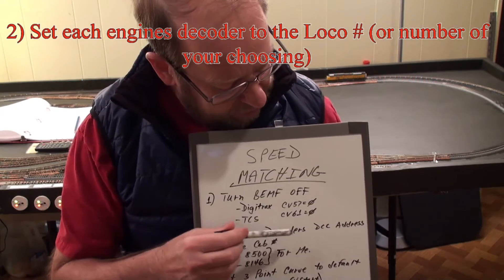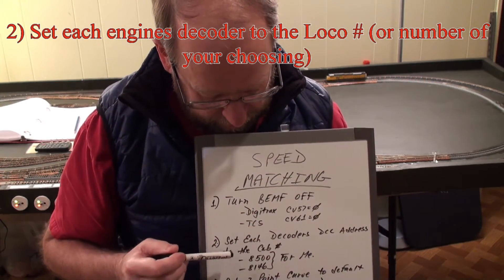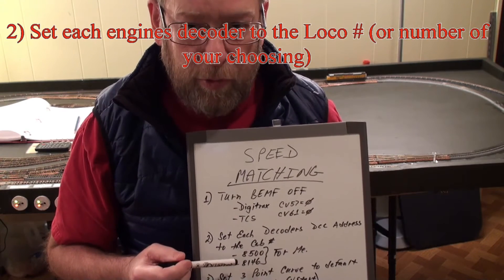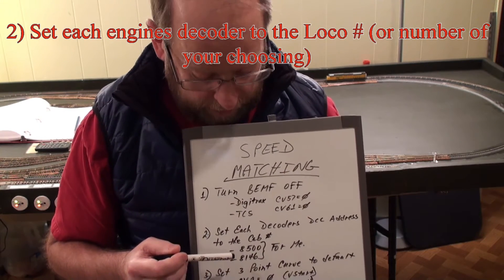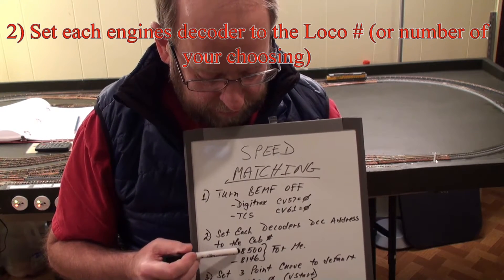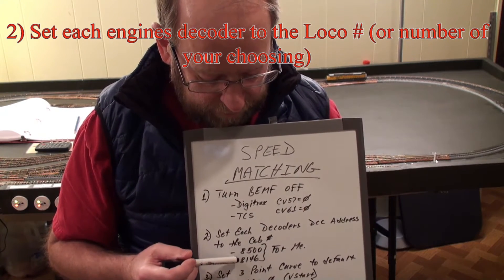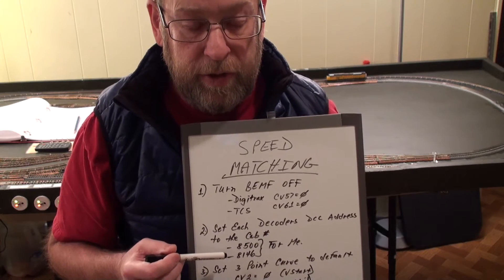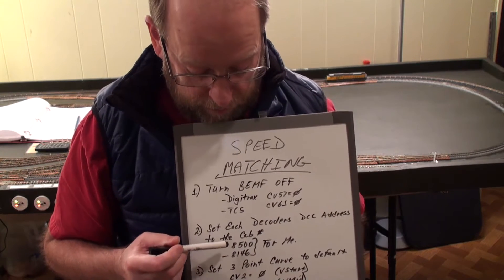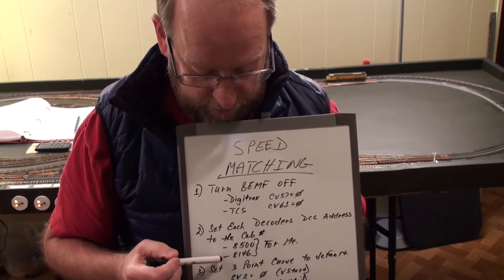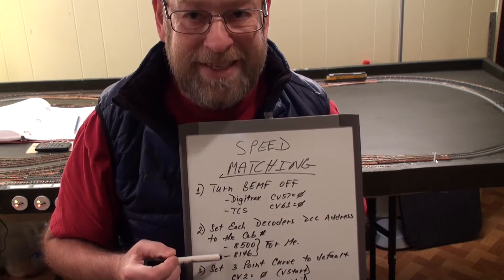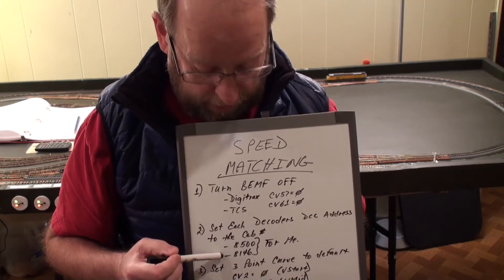Next, you need to set each decoder's DCC address to the cab number, whatever you want. In my case I've got 8500 and 8146. So I look at the locomotive and I know what the DCC address is. These have to be unique.